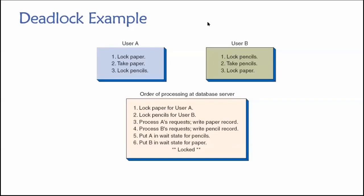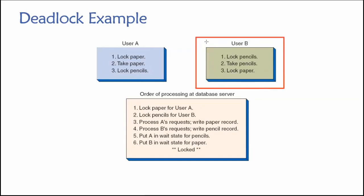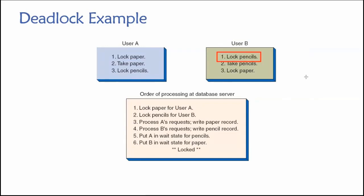Here's a non-technical example illustrating this with pencils and paper. User A has a transaction: they first want exclusive access to paper, so they lock paper — nobody else can access the paper until user A is done with it. Then they're going to do something with the paper, and then they're going to want to do something with pencils. Simultaneously, user B has a transaction and starts off by grabbing exclusive access to the pencils — so no one else can have any pencils until user B is done with them. User B does something with those pencils and then requests exclusive access to paper.